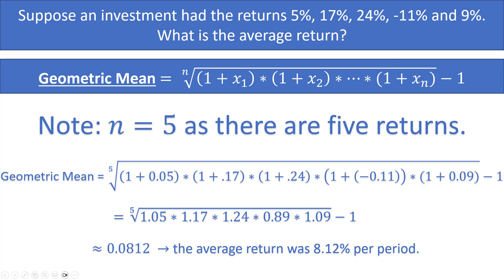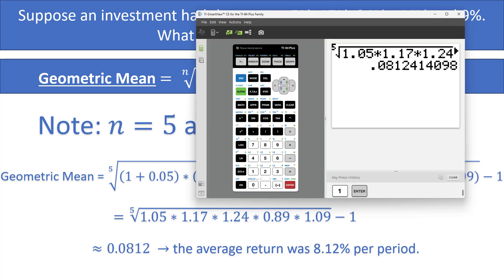Now alternatively we could do this with the 1/5th power. So if we did 1.05 times 1.17 times 1.24 times 0.89 times 1.09, since we had five returns our n was five, instead of taking the fifth root we could raise this to the 1/5th power and then we could subtract one, and we would get the exact same answer.